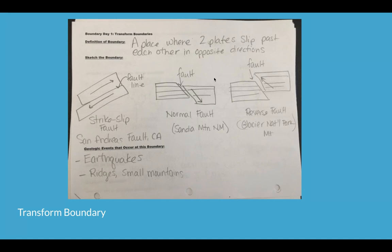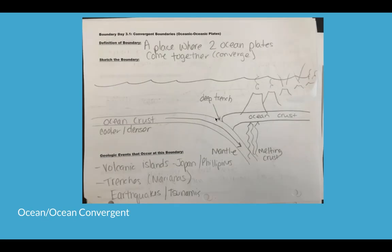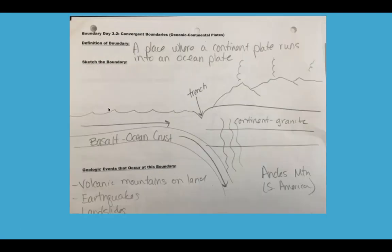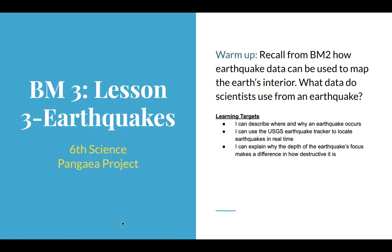To review: a transform boundary is a fault where two plates slip past each other — earthquakes, sometimes small ridges. A divergent boundary like the Mid-Atlantic Ridge or the African Rift Valley produces earthquakes and underwater volcanoes. Iceland is a volcanic island nation sitting on that ridge. Ocean-ocean convergent boundaries produce volcanic island chains; ocean-continent convergent boundaries produce volcanoes and earthquakes; and continent-continent collisions produce very tall mountains with lots of earthquakes but no volcanic activity.